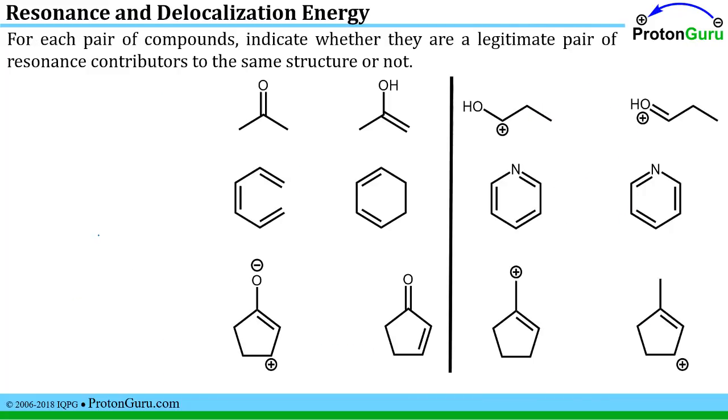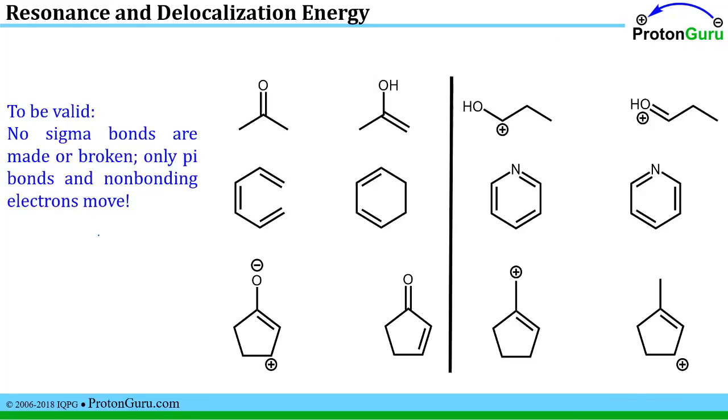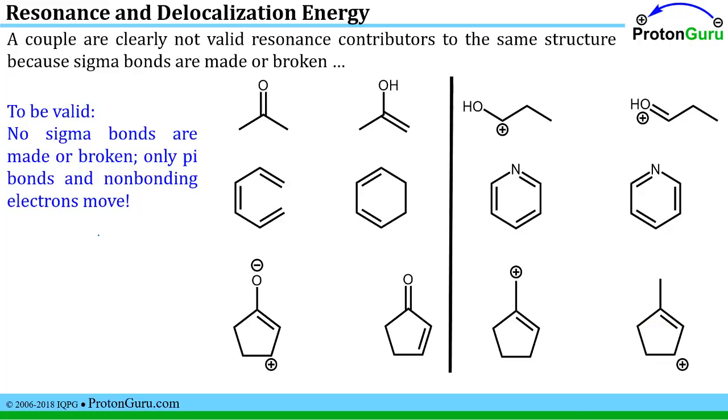Next let's try to identify whether each of these pair of compounds represent a legitimate pair of resonance contributors or not. If two structures are valid resonance contributors to the same structure, you can't have any changes in sigma bonds, I can't make or break new sigma bonds, and I can only move pi bonds and non-bonding electrons. Based just on that, a couple of these are clearly not valid resonance contributors to the same structure because you've got sigma bonds that are different in comparing them.